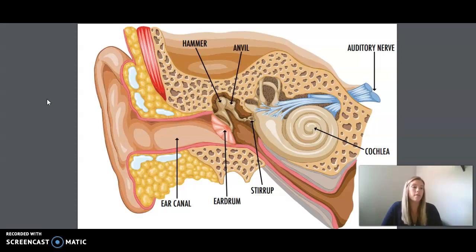At the end of the ear canal, sound bounces off a thin, flexible flap of skin that stretches across the end of this tunnel. This membrane, or thin-skin flap, is called an eardrum because sound vibrates off of it in the same way that sound vibrates off the top of a drum when it is pounded with a drumstick. Your eardrum separates your outer ear from your middle ear.